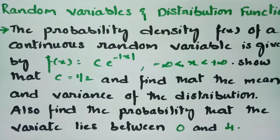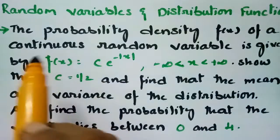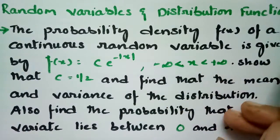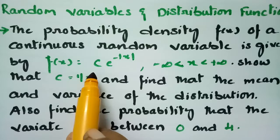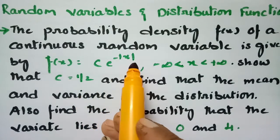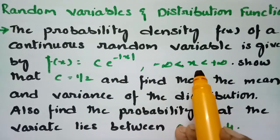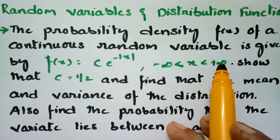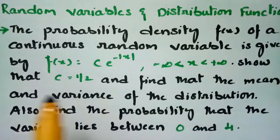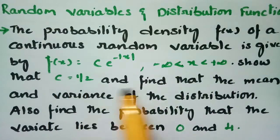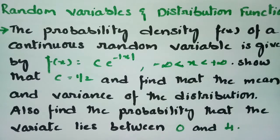This video covers a problem on random variables and distribution functions. The probability density function f(x) of a continuous random variable is given by f(x) = c·e^(-|x|), where x lies between minus infinity to plus infinity. We have to show that c is equal to half, find the mean and variance of the distribution, and find the probability that the variate lies between 0 and 4.